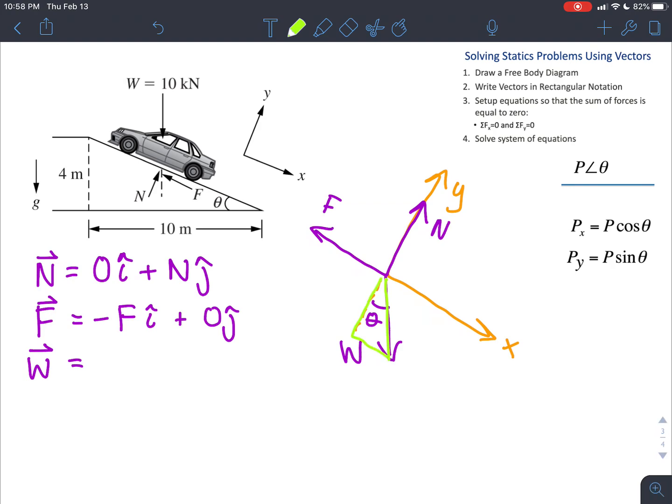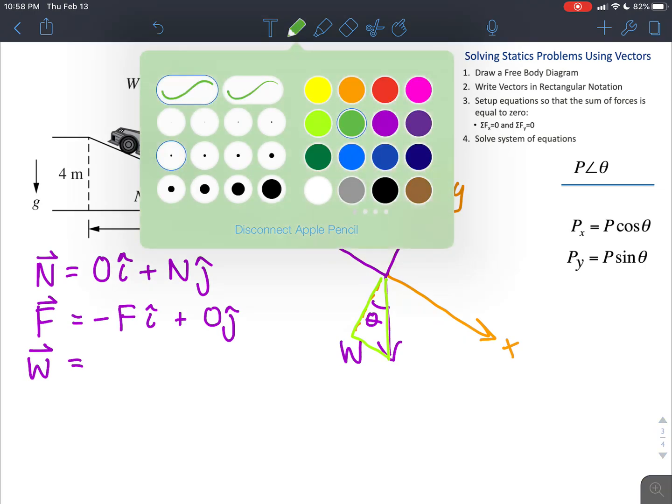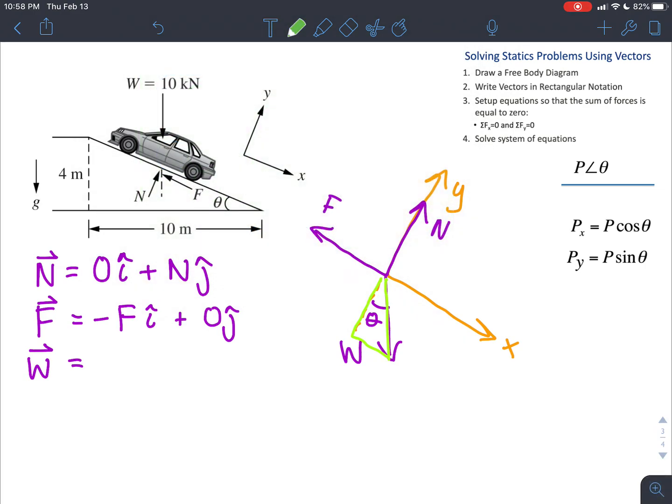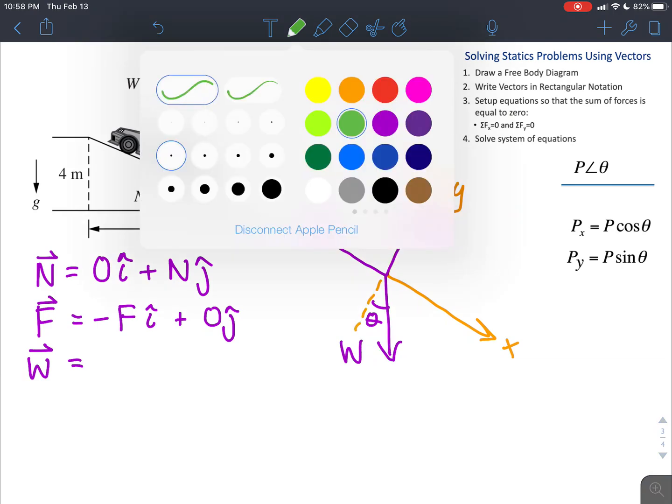And because of where our adjacent and opposite are, for once, the y component is actually the adjacent, and the x component is the opposite. And so because of that, our x component is actually going to be the sine in this case.